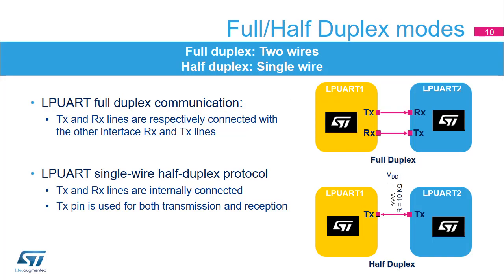The LPUART supports full duplex communication, where the TX and RX lines are respectively connected with the other interface's RX and TX lines. The LPUART can also be configured for single-wire half-duplex protocol, where the TX and RX lines are internally connected. In this communication mode, only the TX pin is used for both transmission and reception.